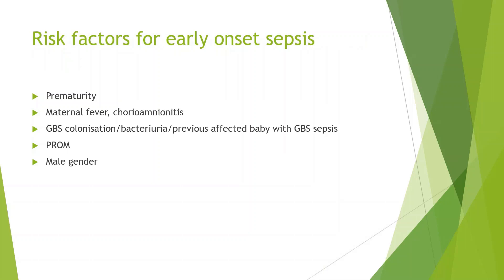Risk factors for early onset sepsis include prematurity, maternal fever, or chorioamnionitis. There is a lot of interest in reducing unnecessary use of antibiotics in babies by over-diagnosing chorioamnionitis. We have the sepsis risk score, which can be done online, and we can reduce the use of antibiotics by scoring the risk factors. Group B streptococcus colonization, bacteriuria, previous affected baby with sepsis, PROM, and male gender are all risk factors as well.